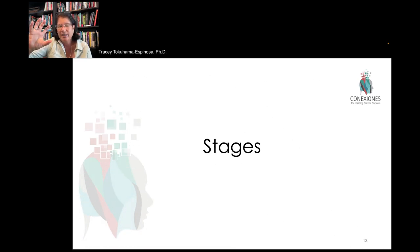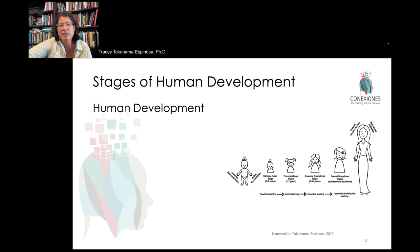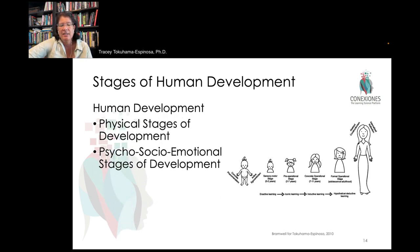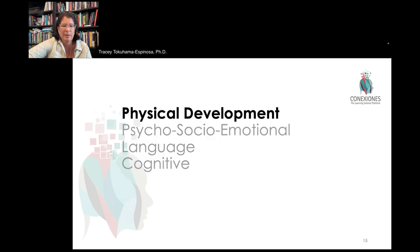Hold that in mind while we talk about stages of development. Stages of human development have typically been divided into physical development, psychosocial emotional development, language development, and cognitive stages of development, which tends to draw from all of the other areas.